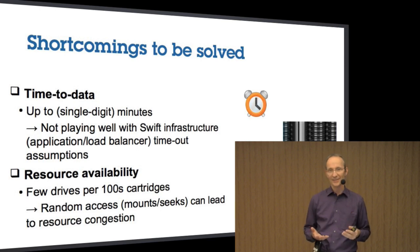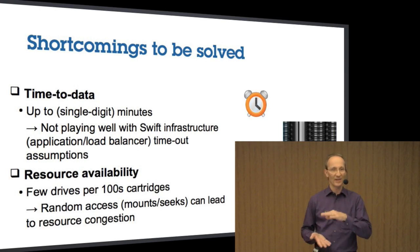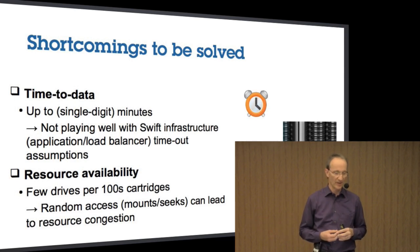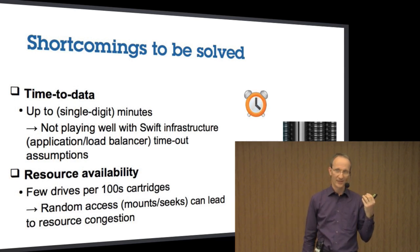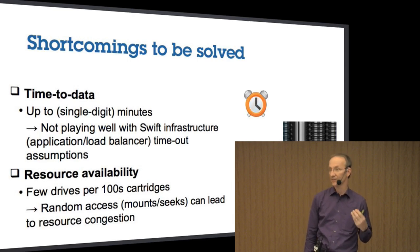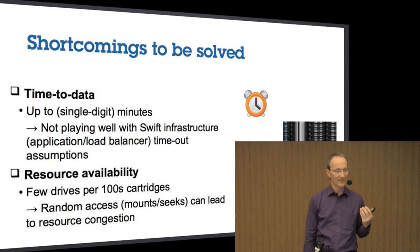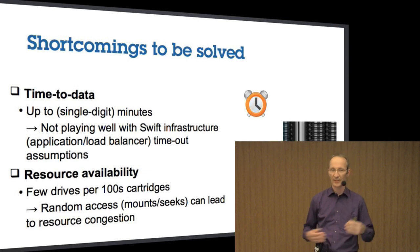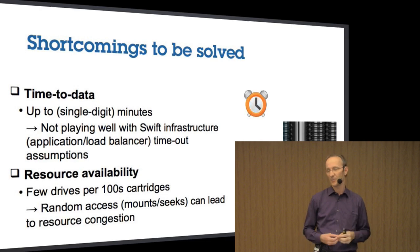The resource availability is worsened by having fewer drives for a huge number of cartridges. Really, to have your TCO play out well, you need at least, for example, 100 cartridges per drive. And so, if you get random access, you could have a lot of resource congestion by having requests waiting for your tape drive to become free for the next cartridge to be served.